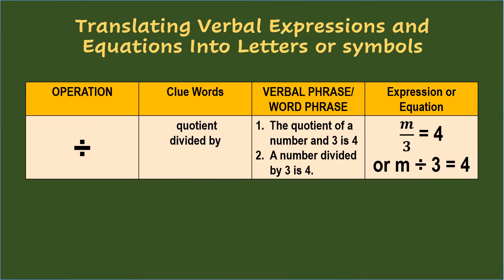For division, the clue words are quotient and divided by. Examples: the quotient of a number and 3 is 4; a number divided by 3 is 4. Using the letter m, these phrases translate to the equation m over 3 equals 4, or m divided by 3 equals 4.